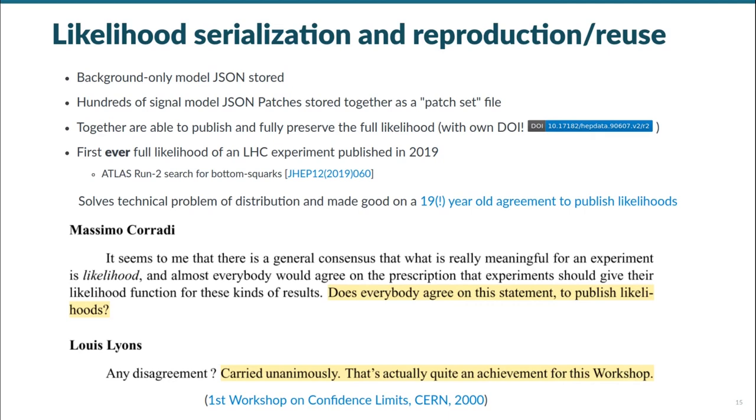The publication of the full likelihoods to HEP data using the PyHF schema has an additional distinction of solving a nearly 20-year-old problem in the field of particle physics. At a workshop in 2000, whose proceedings the quotes here are taken from, there was agreement in the community that the LHC experiments should publish their likelihoods as part of the results. However, the technical aspect of what exactly to publish and how are non-trivial. By focusing on just HistFactory models, given their extensive use and popularity, we were able to make good on this agreement when in 2019, the Atlas collaboration published to HEP data the likelihoods for a search for bottom squark pair production in final states containing Higgs bosons, B-jets, and missing transverse momentum.